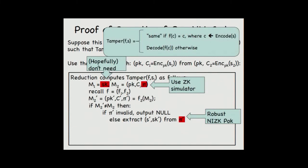Then we consider the tampering function F equals F1, F2. Let's consider F2 on input M2. Suppose it really modified M2. Then we consider the following case: if pi prime is invalid proof, then the tamper experiment should output null. Otherwise, you can extract the witness S prime and SK prime from the proof pi prime, and this is because robust NIZK. It seems that the output of this experiment should be S prime. However, this is only true if SK prime equals F1 of M1. Otherwise it should be null.